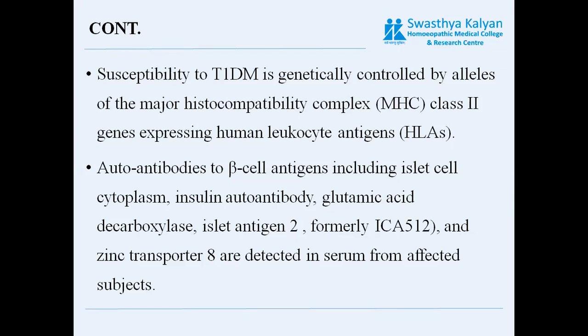The human leukocyte antigen helps the immune system differentiate between proteins made by the body and those made by foreign invaders like bacteria and viruses. HLA is the human version of the major histocompatibility complex, a gene group that occurs in many species. HLA consists of more than 200 genes located close together on chromosome number 6.